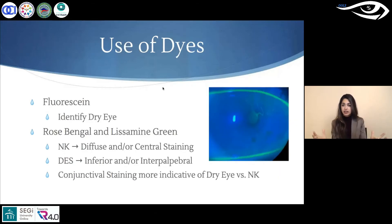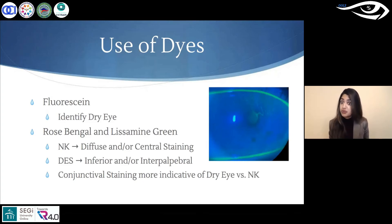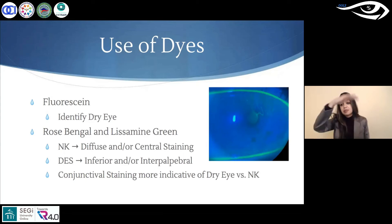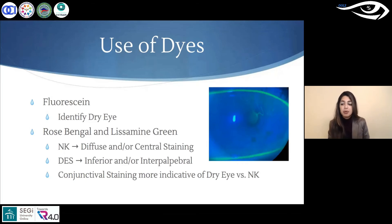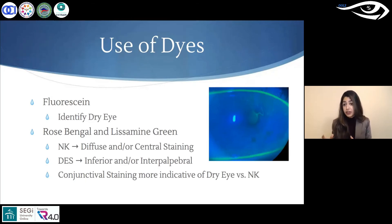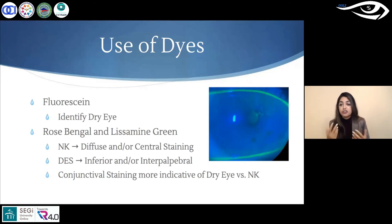Moving on to the use of dyes — traditionally we think fluorescein will identify any corneal impact, which is true. When I think about fluorescein, I want to see how my epithelium and tear film are looking, so I'm looking at both frank staining as well as breakup time. The quality, amount, and location of staining can help differentiate dry eye disease versus neurotrophic keratopathy. Inferior staining is more traditional with ocular surface dryness, whereas more diffuse or central staining is associated with NK.